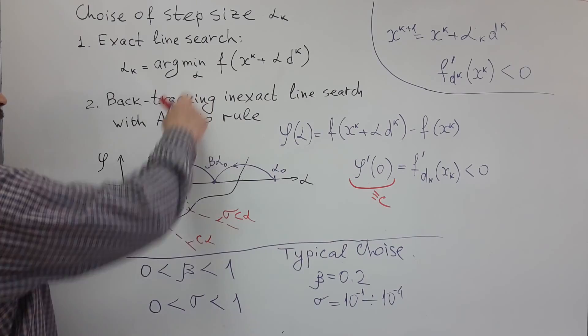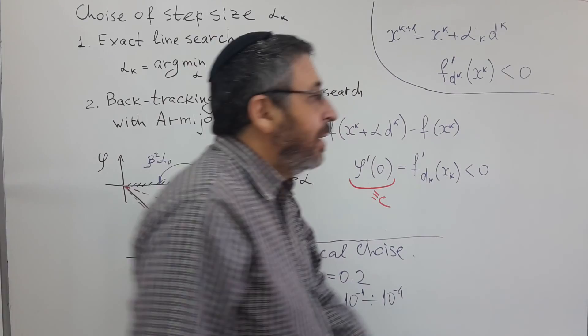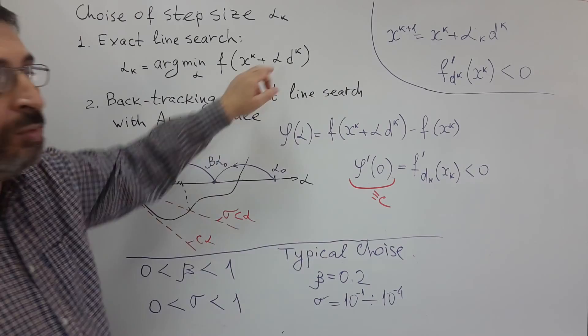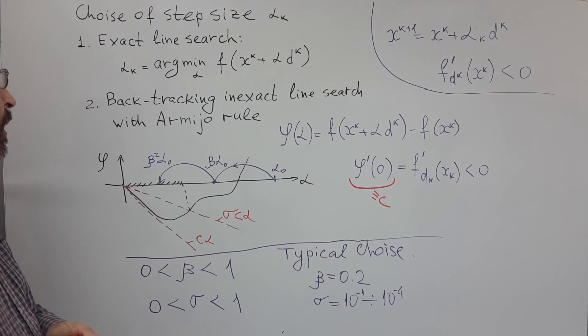The advantage of this method is that we will get as good as possible progress in direction of dk. The disadvantage is that we could spend too much computation in this stage, comparing to the computation necessary to evaluate a reasonably good direction.